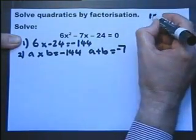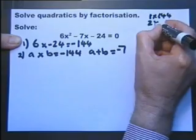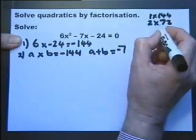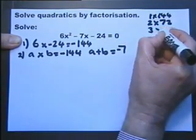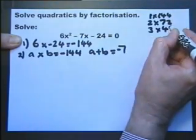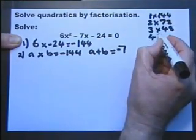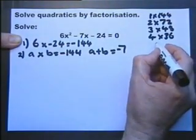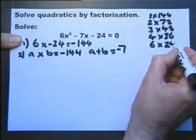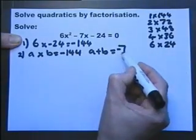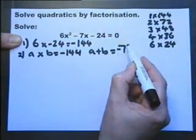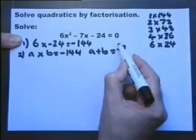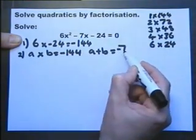Well that's 1 times 144, 2 times 72, 3 times 48, 4 times 36, 6 times 24. Appreciate we're looking to find two numbers that not only multiply together to give me the 144, but have a difference of 7.